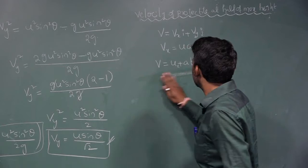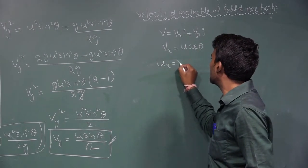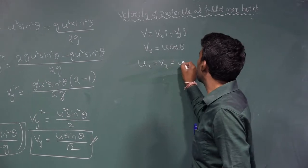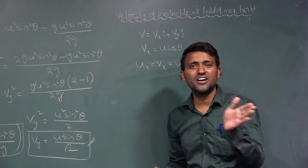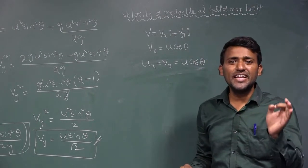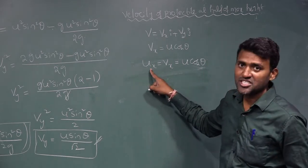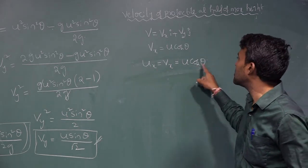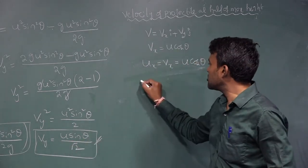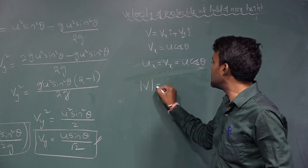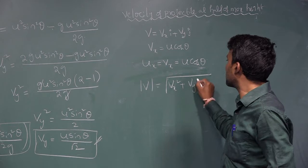Along the horizontal direction it is maintaining uniform velocity, so initial velocity is equal to final velocity — that is why Vx is equal to U cosθ. Now, the magnitude of V is equal to the square root of Vx² plus Vy².